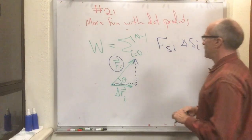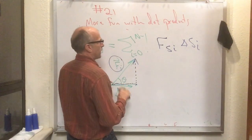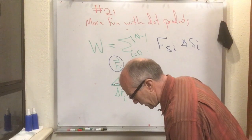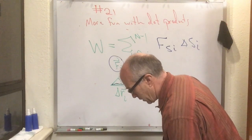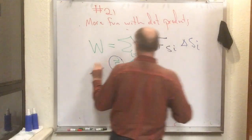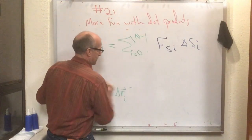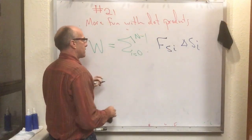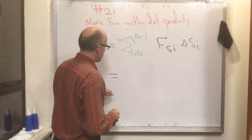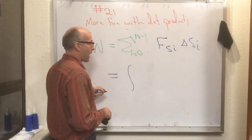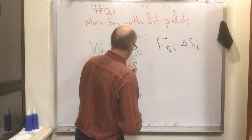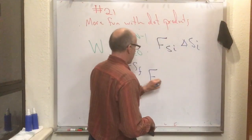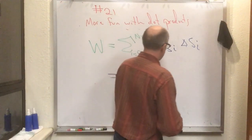Now we can see that this is an integral — and this is the integral that Knight gives as equation 9.10 on page 211. This is Knight's version of work: once you take the limit as delta-s goes to zero, work equals the integral along the path from s-initial to s-final of the component of F along the path, ds.